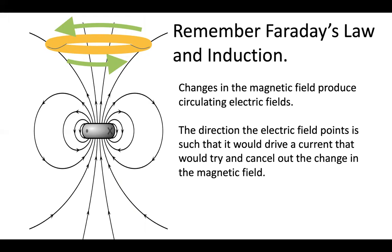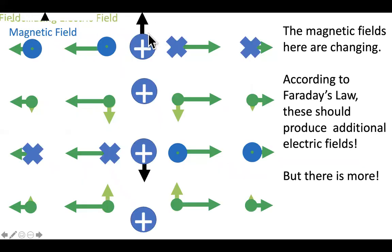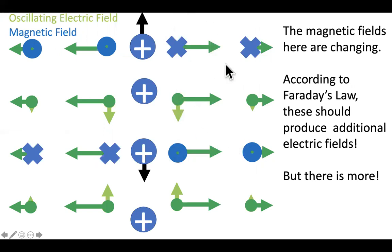That's important in situations like this, because as we go from this situation to this situation, the magnetic field goes from into the page to out of the page — there's a changing magnetic field. That changing magnetic field is going to produce additional electric fields, which turn out to also point up and down. This isn't in that picture yet. It turns out that gets really important, especially as you get far from the charge and the electric field from Coulomb's law gets weaker and weaker.